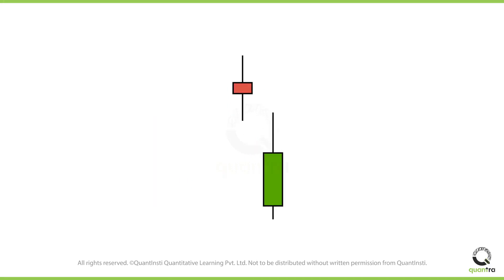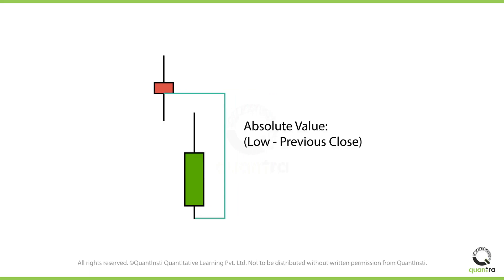Similarly, if we have a scenario wherein today's high is less than the previous close, in such a case, we can find the true range by calculating the difference between today's low and the previous close. Note that we will only look at the absolute values, since we are only interested in the magnitude of the difference.